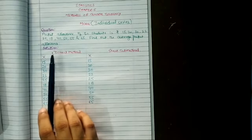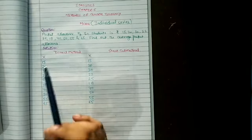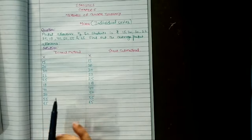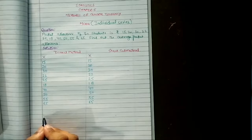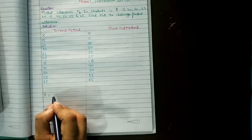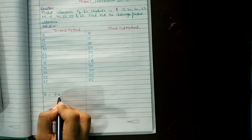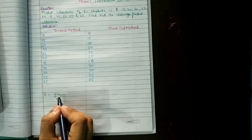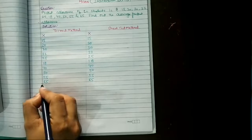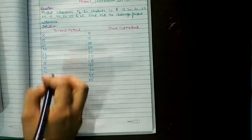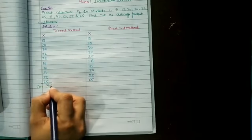First, we will solve this question by direct method. Here I have noted down the x values vertically. First, we have to note down the formula: x-bar or mean equals sigma x upon n. Sigma x means the total of x, and n is the number of observations. The total of x comes to 340.